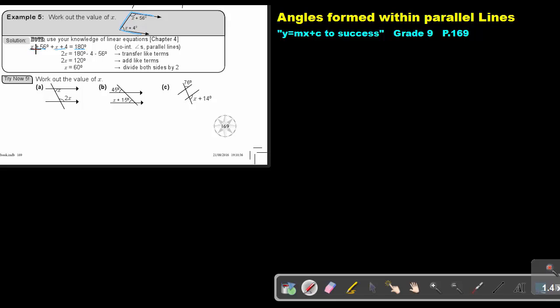Then 1X + 1X will be 2X. I subtract the 56 and the 4 on both sides. Then I simplify and get that my value of X is 60 degrees.